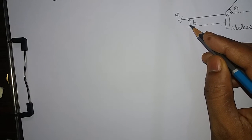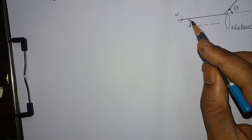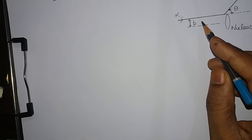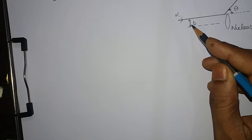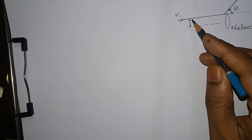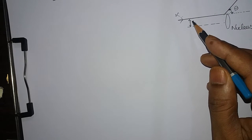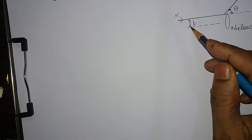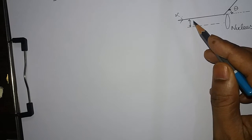Now, what is impact parameter? What is this B? The impact parameter is defined as the perpendicular distance of the velocity vector of the alpha particle from the center of the nucleus when it is away from the atom.